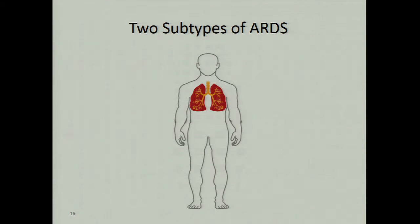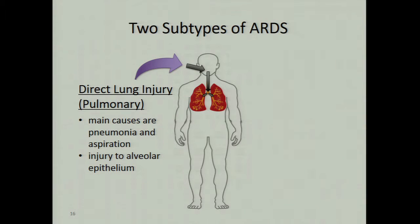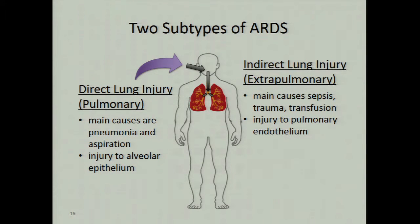ARDS can result from two major types of injuries. The first is direct lung injury — things that arise in the lung itself and spread to involve the whole lung, such as pneumonia and aspiration. Pathophysiologically, the injury starts on the alveolar side with injury to the alveolar epithelium, which then spreads across the whole lung.